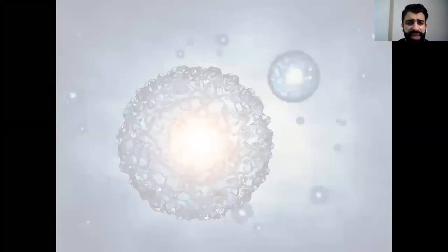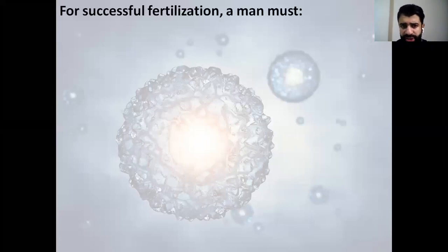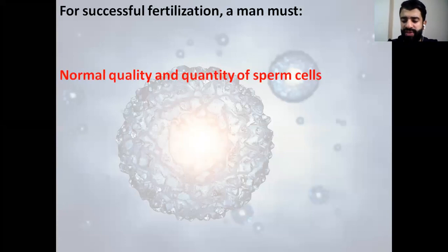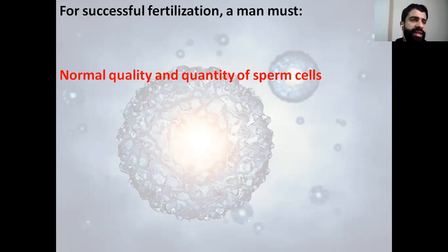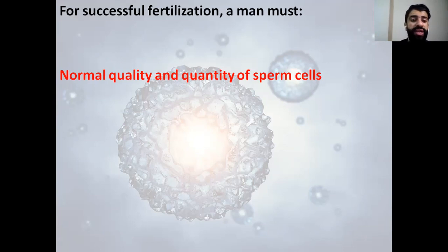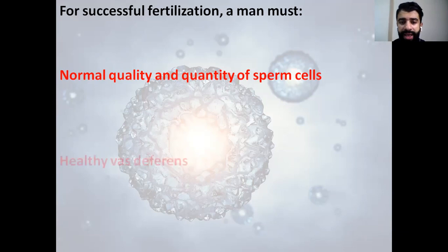For fertilization to occur, the man should have some characteristics. First, normal quality and quantity of sperm cells. Some causes of infertility or sterility in men include low count of sperm cells or abnormal sperm cells — for example, sperm that haven't completely shed their cytoplasm or residual body. So for fertilization to occur, the sperm cell should be normal in quality and quantity. We know there are millions of sperm cells, but only one succeeds in fertilization. The man should also have healthy vas deferens.